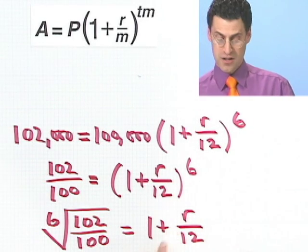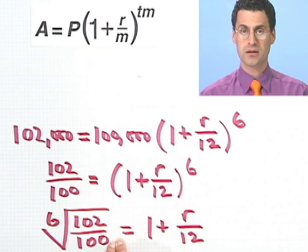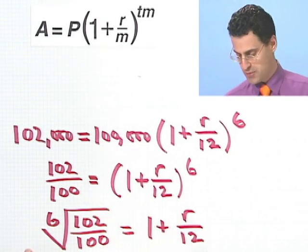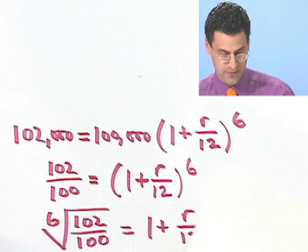I want to solve for R, so I could bring that 1 over and make it a minus 1. And then I could multiply everything through by 12. So let me just take a look at those steps individually.